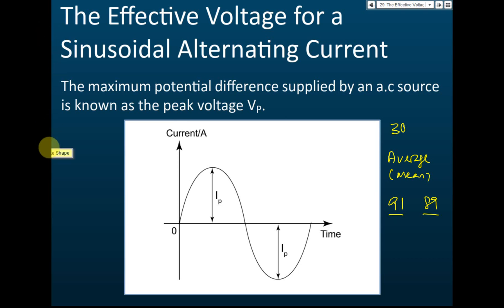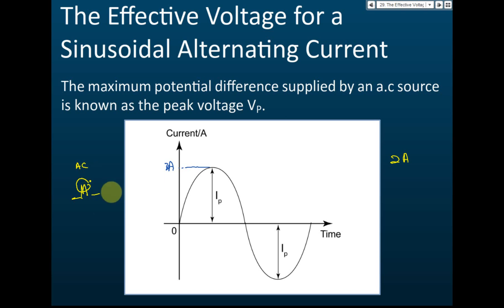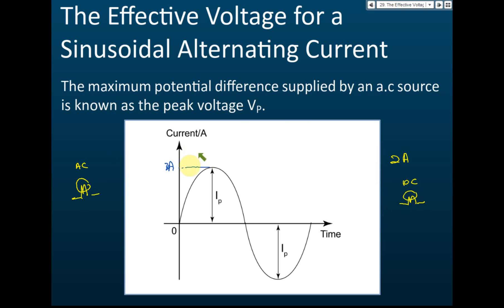Let's say an alternating current has a maximum of 3 amperes, and a direct current measures 2 amperes. If you connect the alternating current to one light bulb and the 2-ampere direct current to another light bulb, which bulb will be brighter? Without doing a calculation, actually we don't know.